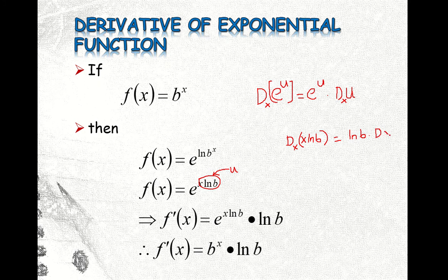The derivative of x with respect to x is just equal to 1. So that is why we have ln b remaining here. That is how we base our derivation of this formula.